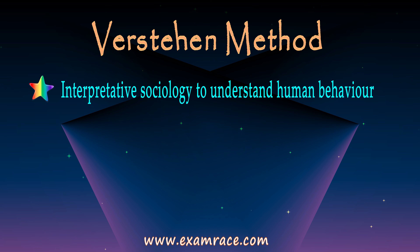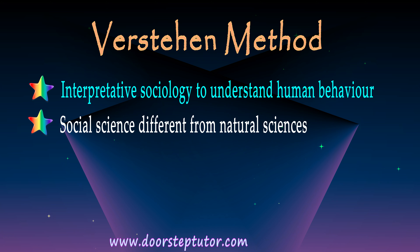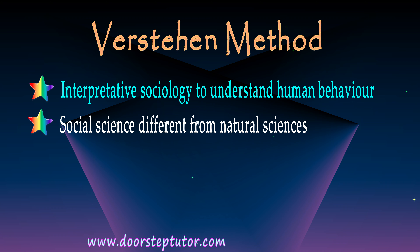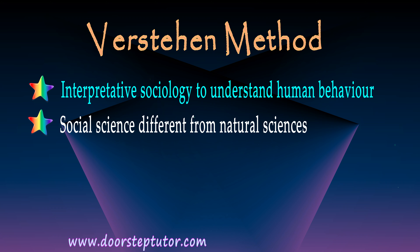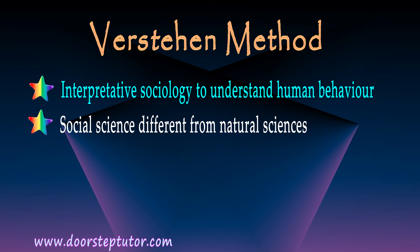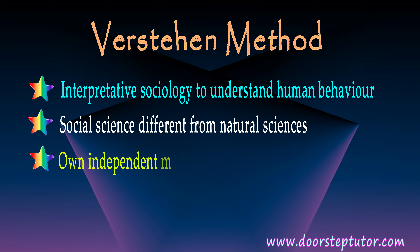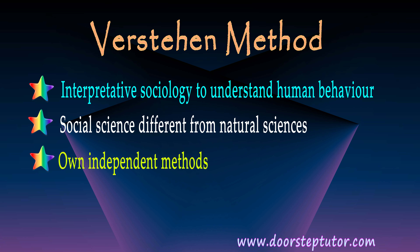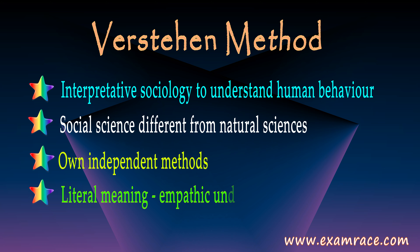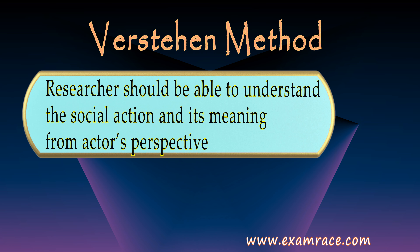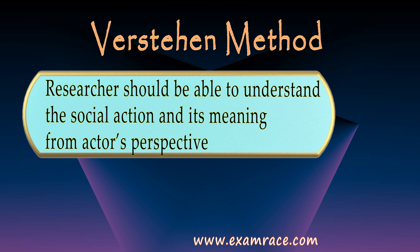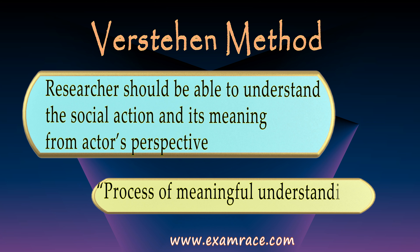As we know, social science is different from natural sciences where you can conduct experiments in a lab, but you cannot conduct experiments on humans in a lab. The results may also always vary when you are researching something based on humans. So sociology and social sciences always need their own independent methods. The Verstehen method is the empathetic understanding of human behavior where the researcher tries to understand the meaning behind a social action and why one is doing something from the actor's perspective, not the researcher's perspective. The process of meaningful understanding of an action done by the actor is the Verstehen method.